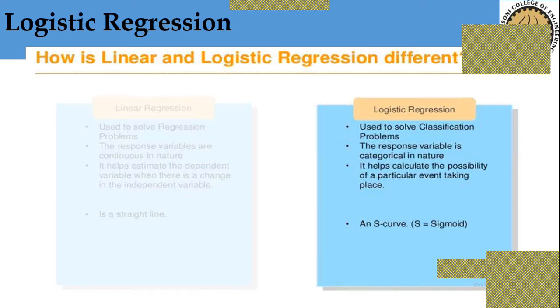The formula to find out logistic regression is called the sigmoid function, also called an S curve, while linear regression uses a straight line.